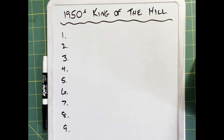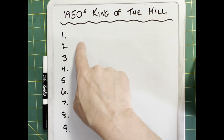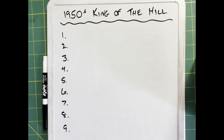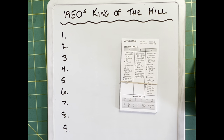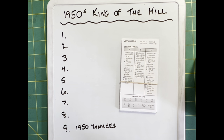All of my teams are in this box. I'm going to mix them up here so that I don't know what I'm drawing, and then I can just blindly put my hand in there and pull them out one by one. Our first team to pull is going to go in the number nine spot, so that we have some drama going up to our first King of the Hill. Let's do our first team — and that will be the 1950 New York Yankees. So they will be the last team to play their first game; they'll be the visiting team for game number eight.